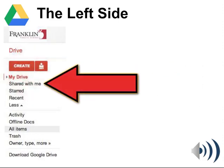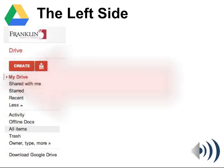The Shared With Me area, when you click on that, will show any files that have been shared to you from others. These are the main areas — My Drive and Shared With Me — that you'll use probably the most within Google Drive.